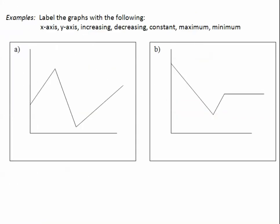Let's do some examples. Label the graphs with the following: the x-axis, the y-axis, increasing, decreasing, constant, maximum, and minimum. Get your highlighter or your color pencil. Where is this graph? Have an x-axis and y-axis. This is horizontal, we'll label the x-axis. This is vertical, we'll label the y-axis.